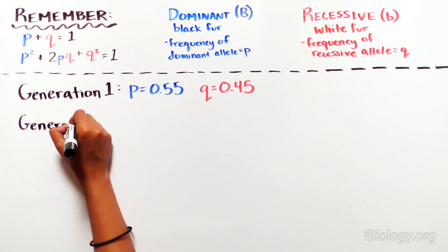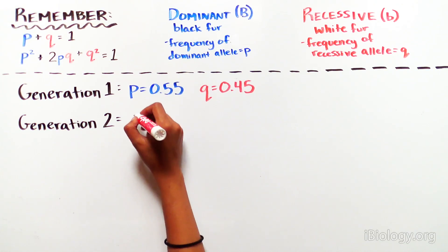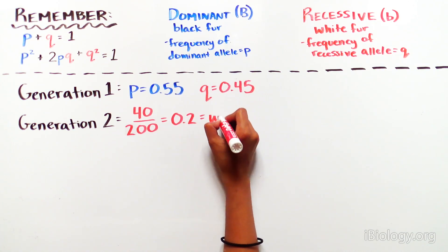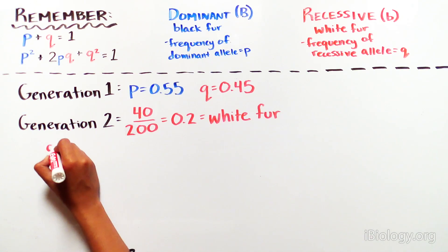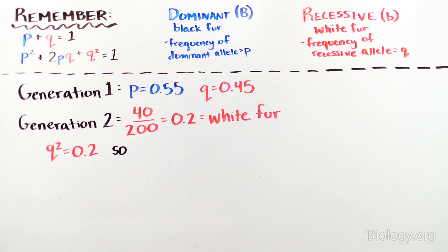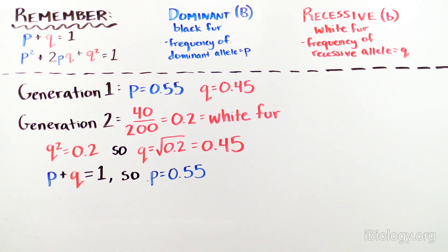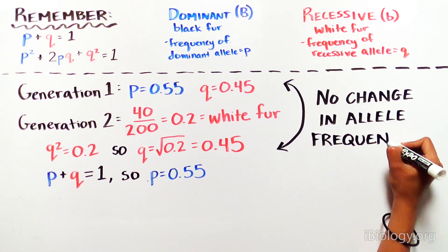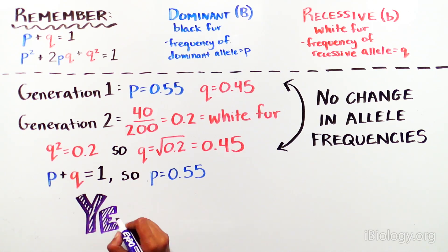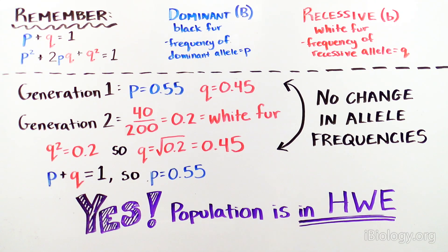These squirrels breed, and in a second generation, you go back to the forest and want to determine if the population is in Hardy-Weinberg equilibrium. You count and see that 40 of the 200 squirrels in this generation have white fur. This means the frequency of the recessive genotype Q squared is 0.2, so Q equals 0.45 and P equals 0.55. Since P and Q did not change from the first to the second generation, we accept the Hardy-Weinberg equilibrium null hypothesis — this population is in Hardy-Weinberg equilibrium and has not undergone evolution.